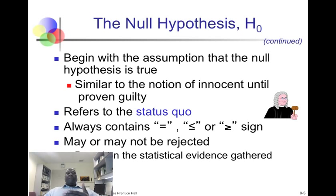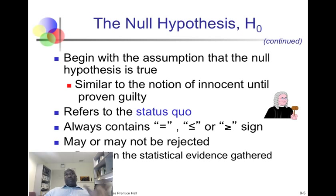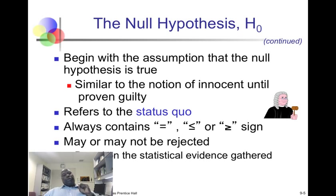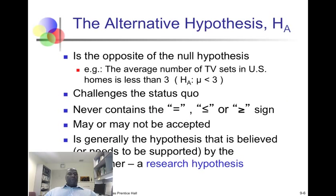We begin with the assumption that the null hypothesis is true — we call it our status quo. It usually contains an equal sign, less-than-or-equal-to, or greater-than-or-equal-to. Our whole objective is to see if the evidence we gather helps to reject that status quo. In a law court, when we say somebody is innocent until proven guilty, it's the responsibility of the prosecution to find evidence to reject the assumption of being innocent. That's kind of what we're doing here.